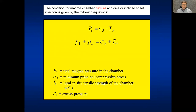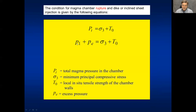What is the condition for magma chamber rupture? The condition is simple: the total magmatic pressure must reach the minimum principal compressive stress sigma three plus the tensile strength T0. Alternatively, lithostatic pressure plus excess pressure must reach sigma three plus T0, meaning the total pressure P_t equals the lithostatic pressure plus the excess pressure — and excess pressure is always the pressure in the chamber in excess of sigma three.